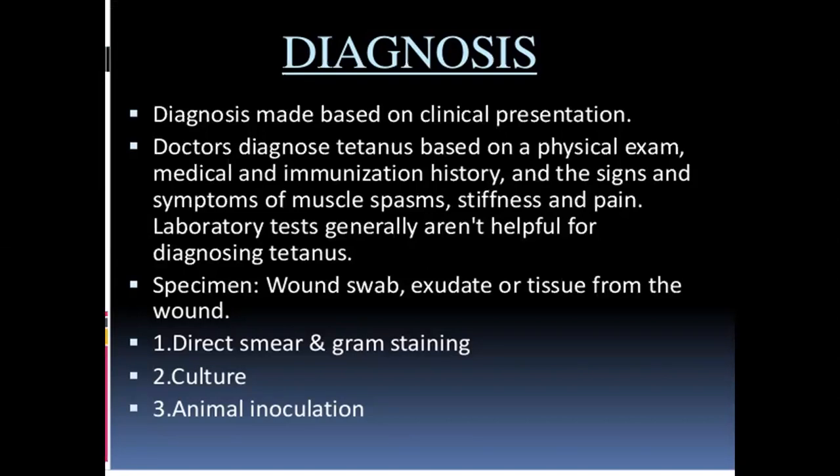The immunization history and the signs and symptoms of muscle spasms, stiffness and pain. Laboratory tests are generally not helpful for diagnosing tetanus. Specimen: wound swab, exudate or tissue formed from the wound, with direct smear and gram staining. Next: culture and animal inoculation.